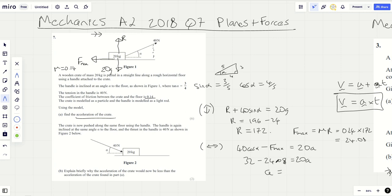32 minus answer divided by 20. I'm getting an answer of 0.396 meters per second squared. That's how you do the first bit.